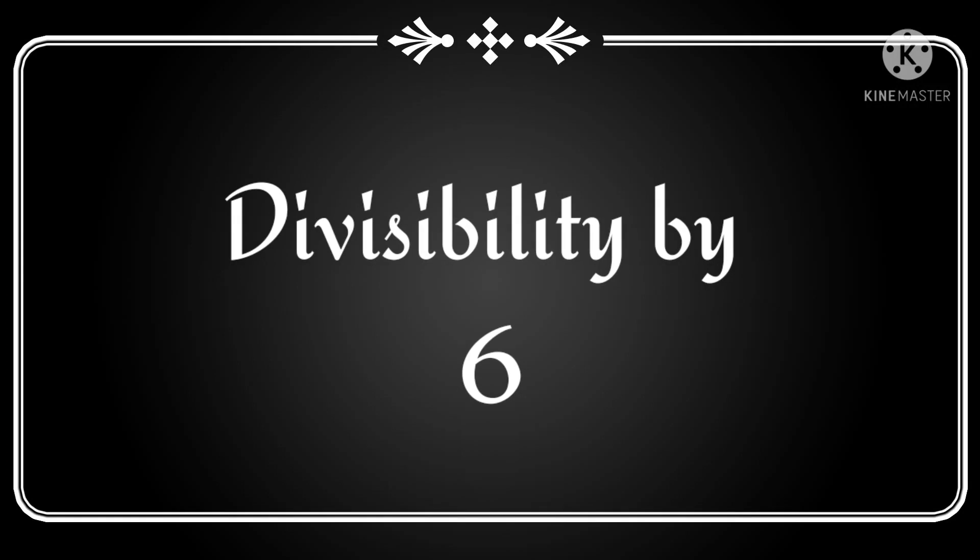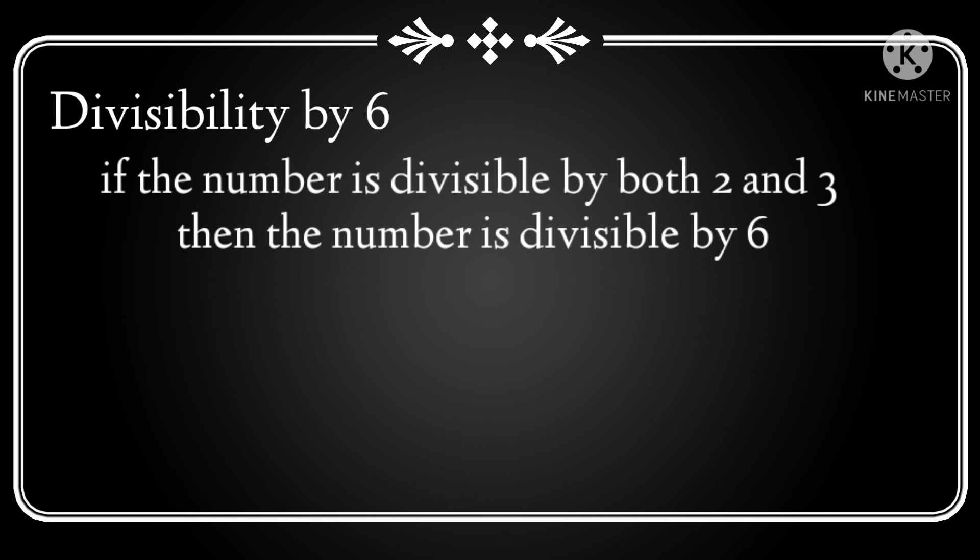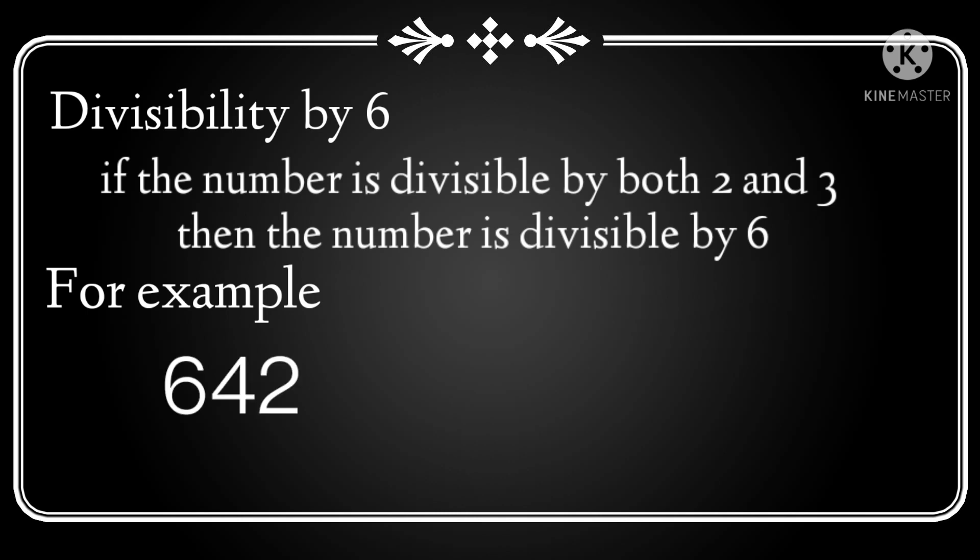Now, the rule for divisibility by 6 is: if the number is divisible by both 2 and 3, then the number is divisible by 6. For example, suppose we have the number 642. This number is even, so it is divisible by 2. Also, if we add 6 plus 4 plus 2, the sum is 12, which is divisible by 3. So the number is divisible by 3 as well. Since it is divisible by both 2 and 3, it is divisible by 6.